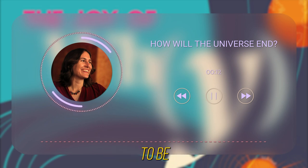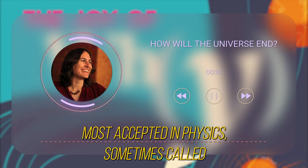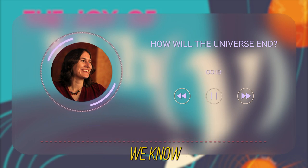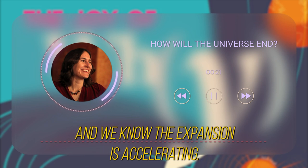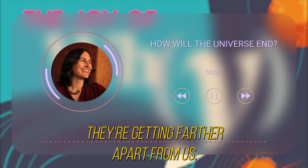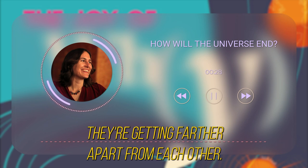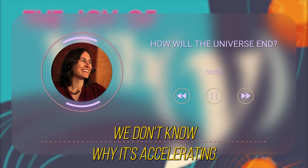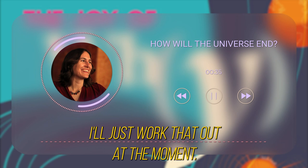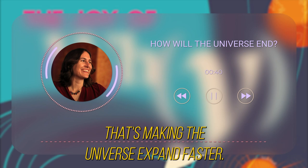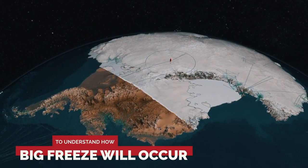The heat death is the one that is considered to be most accepted in physics. It's sometimes called the big freeze colloquially. The idea behind the heat death is we know the universe is expanding and we know the expansion is accelerating. The galaxies are getting farther apart from us and from each other, and this expansion is continuing and getting faster over time. It's due to something we call dark energy, though we don't know what dark energy is.